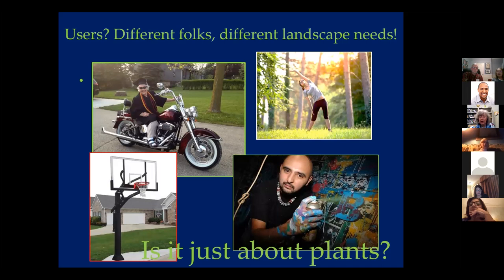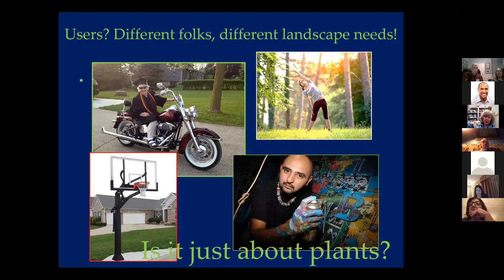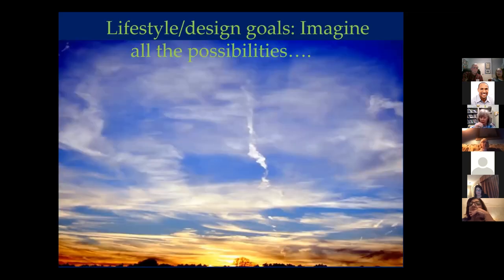All of us are different people. You might want outdoor yoga, a basketball court, a space for art — all these things make you want different things from your landscape. Let's look at some possibilities of things that might make your life better, happier, and easier.